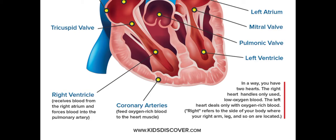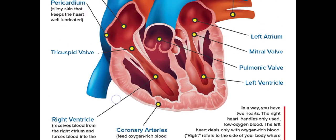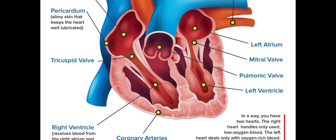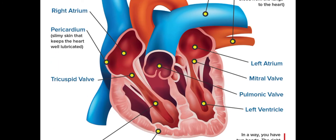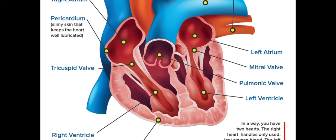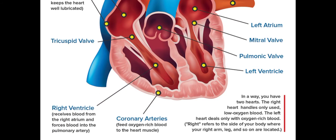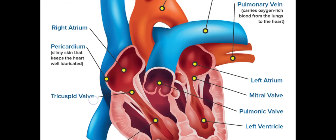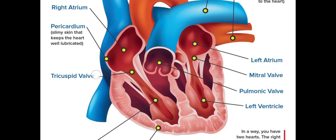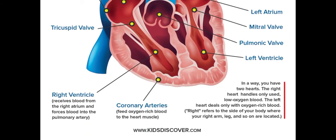We also have the coronary arteries, which feed oxygen-rich blood to the heart muscle. Then we have the mitral valve, found just on top of the left ventricle. We've already talked about the pulmonary valve. And then we have the left ventricle as well. So that's all about the main parts of the heart.